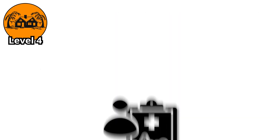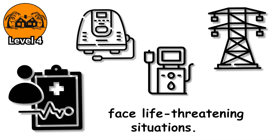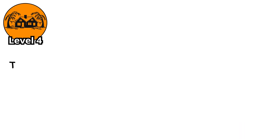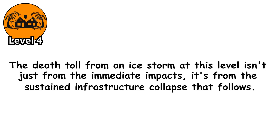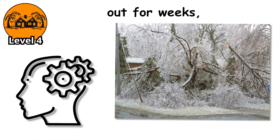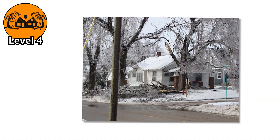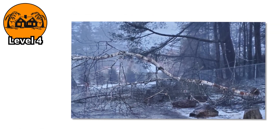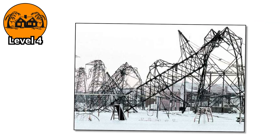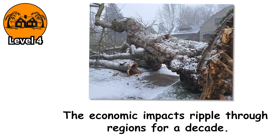Healthcare systems face critical strain. Hospitals on generator power start triaging patients. People with medical conditions requiring electricity — home oxygen machines, dialysis equipment — face life-threatening situations. Emergency services can't reach everyone who needs help. The death toll from an ice storm at this level isn't just from the immediate impacts — it's from the sustained infrastructure collapse that follows. The psychological impact is profound. When power goes out for weeks, when stores run out of supplies, when you realize help isn't coming quickly, people experience genuine crisis stress. Communities either pull together in remarkable displays of human resilience, or they fracture under the pressure. Recovery from a Level 4 ice storm takes months, sometimes years. The electrical grid has to be substantially rebuilt, not just repaired. Damaged trees pose ongoing hazards for years. The economic impacts ripple through regions for a decade.